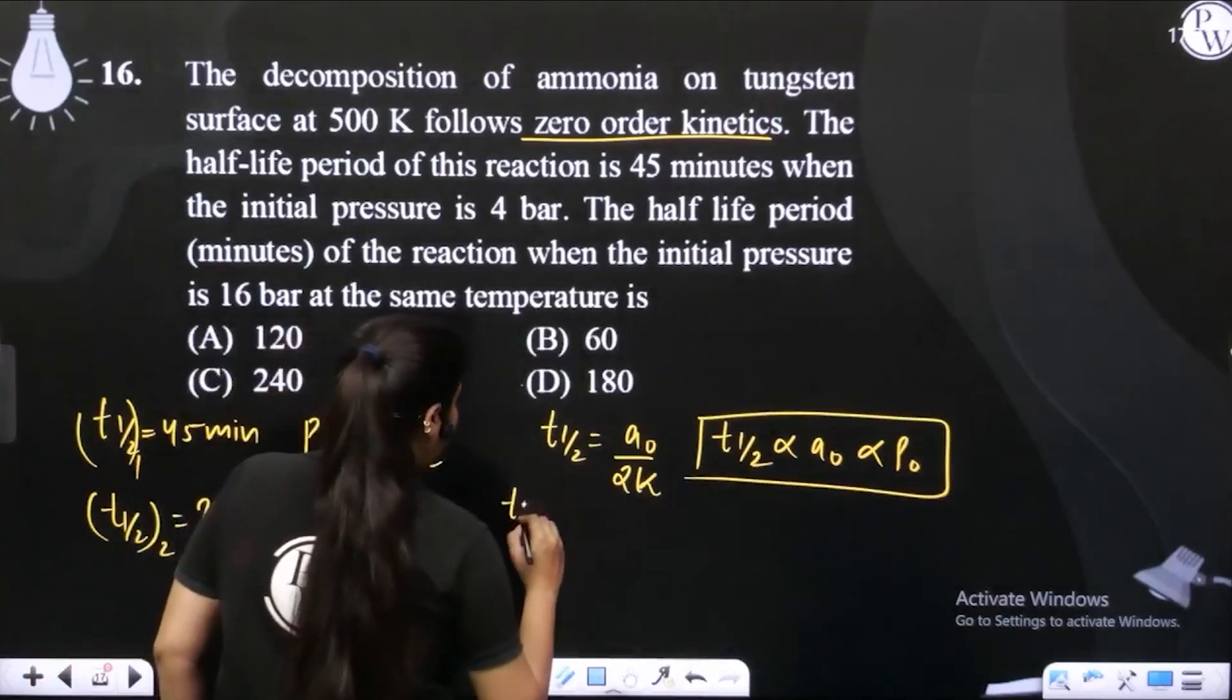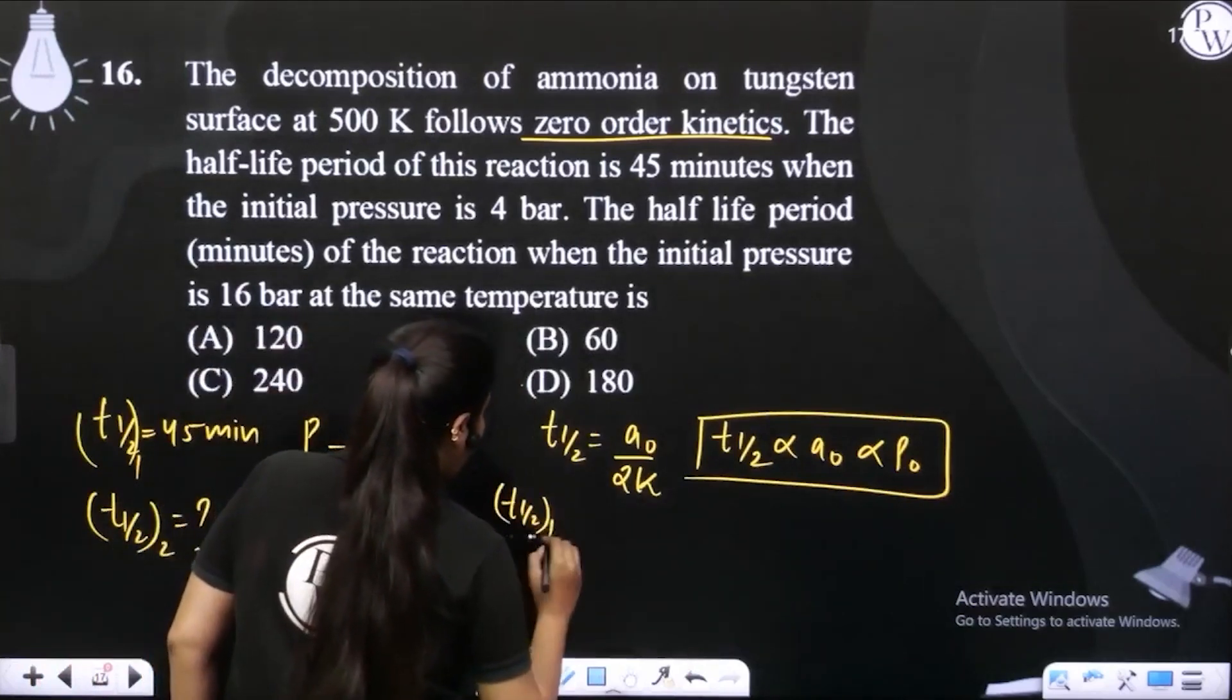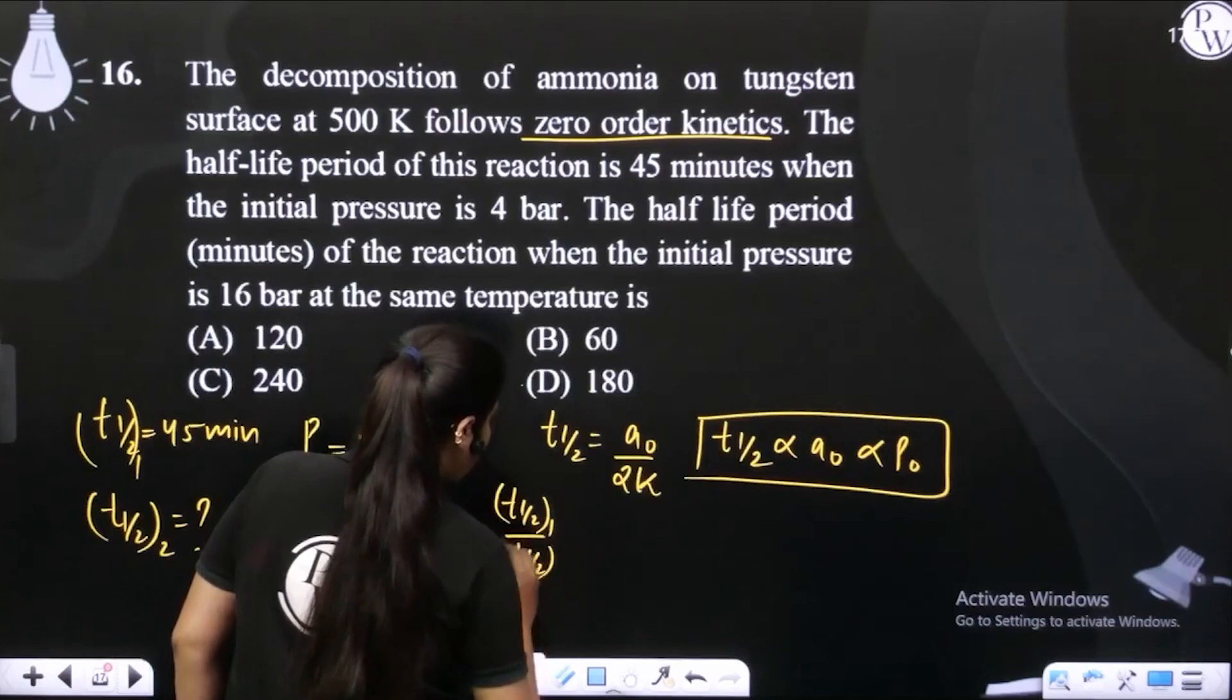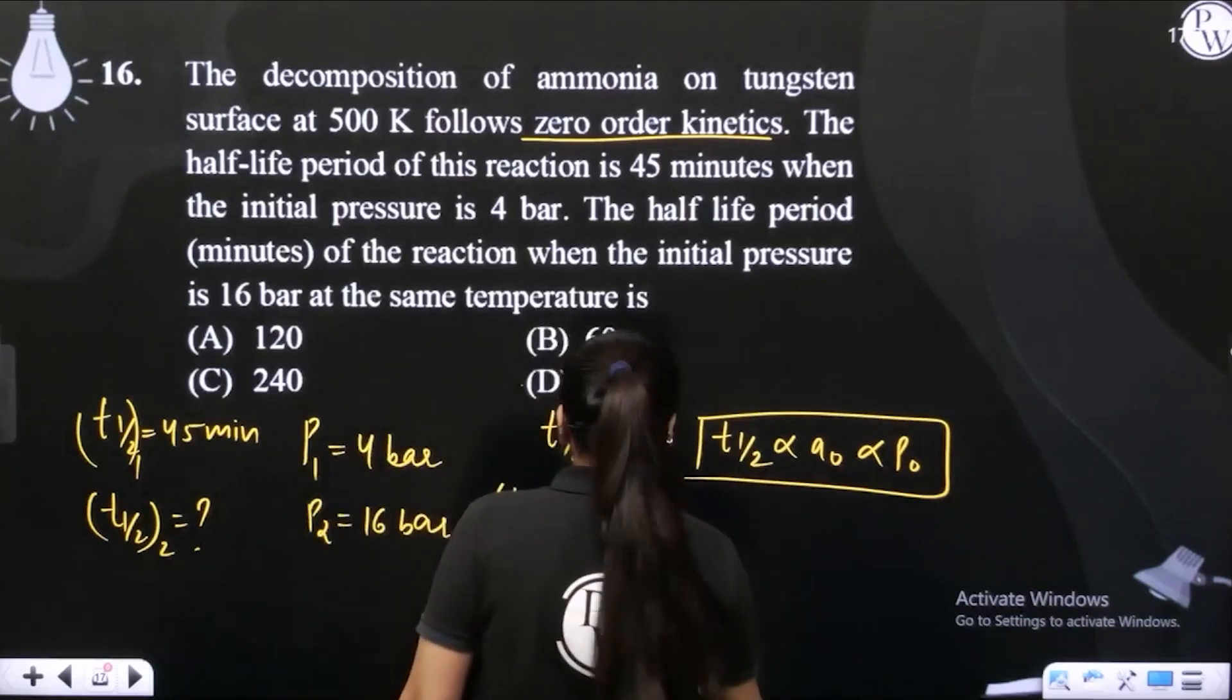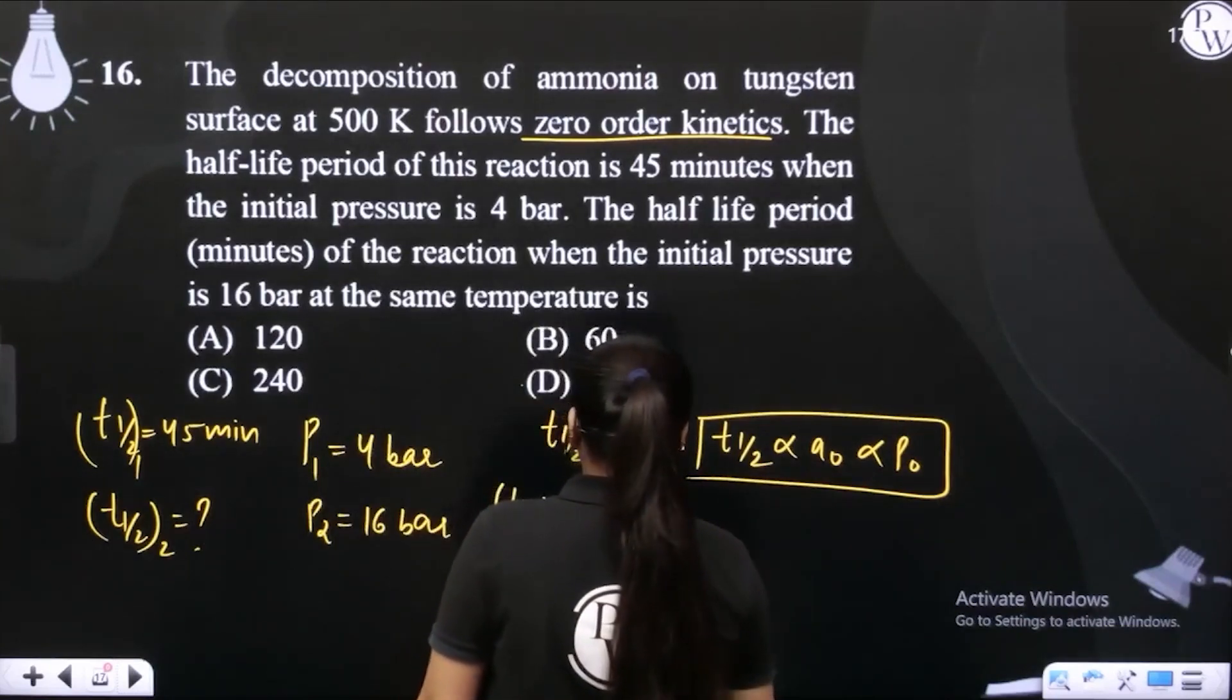So yahan se main kya likhu, half-life one upon half-life two is equals to P1 upon P2. So P1 hai 4 upon 16. So yahan se kitna aa jaega?